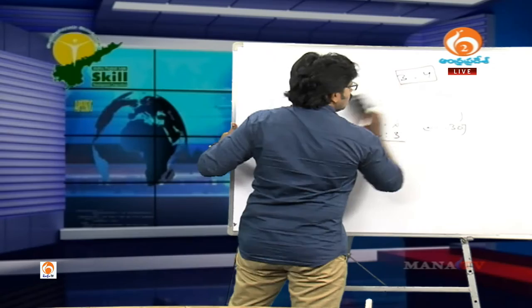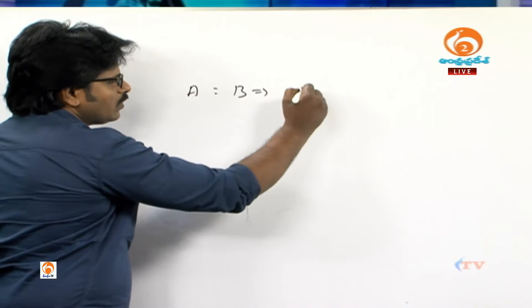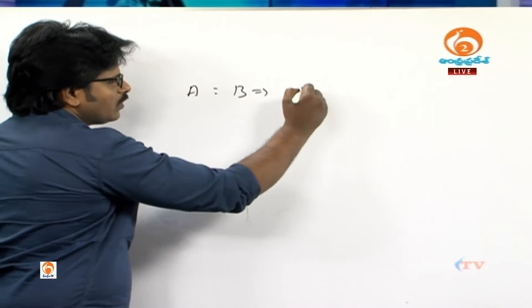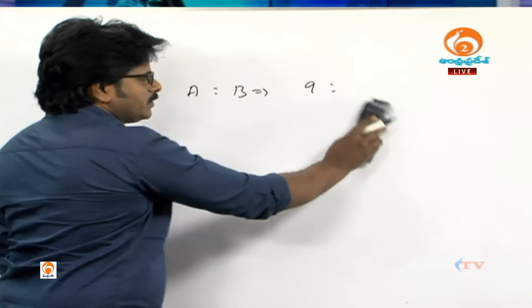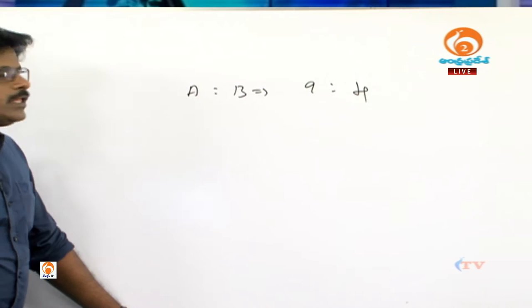There are different types of ratios. If the original ratio is A is to B, for example 9 is to 4, we can find the duplicate ratio. The duplicate ratio is obtained by squaring both terms of the ratio.